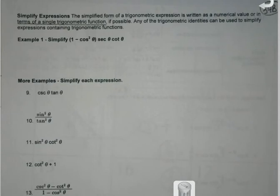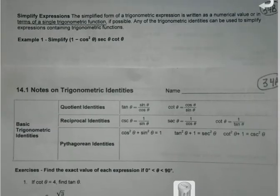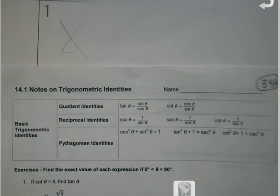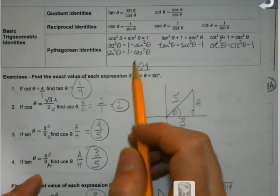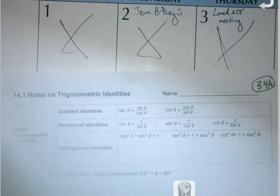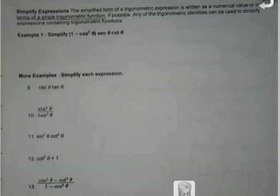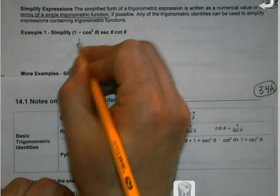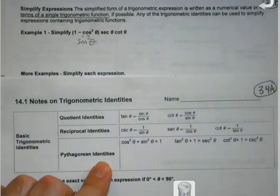The simplified form can be written as a numerical value, which we don't do as often unless it comes out to be one, or in terms of a single trig function. That happens much more often. So any trig identity can be used to simplify. I notice that 1 minus cosine at the front. Didn't we just a minute ago do something that ended up equaling 1 minus cosine? We did when we turned that into sine squared.